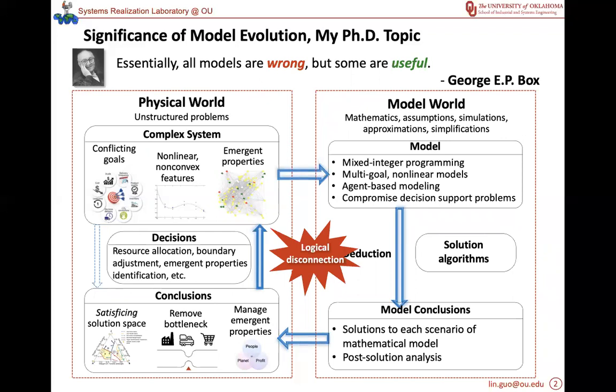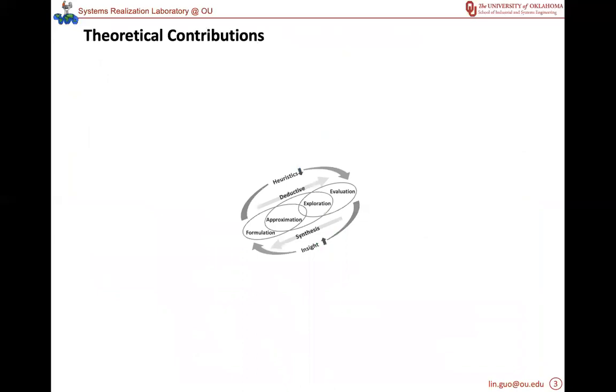How can I do it? I propose the model evolution loop. There are four stages in this loop. When we enable interconnections among the stages, we can obtain insight to replace the heuristics and improve the system. When we automate the process, the system becomes self-organizing.